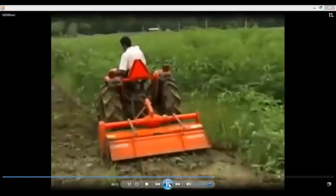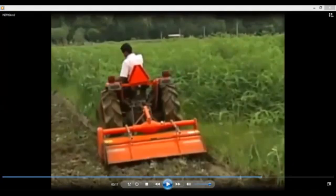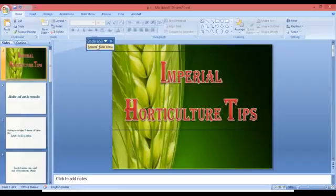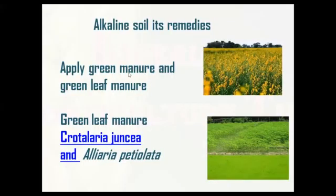Naturally, we can control alkaline soil. We can use green manure and green leaf manure, which can help in some ways. We can see some of the green manure plants you can grow in your land. Before flowering or blooming, you can plow these plants into the soil. This will automatically reduce your alkaline soil level.